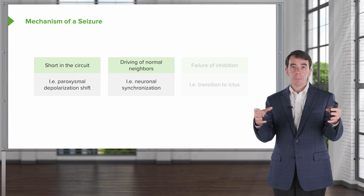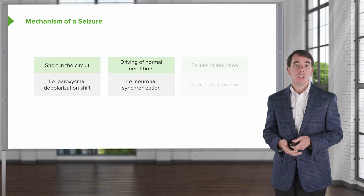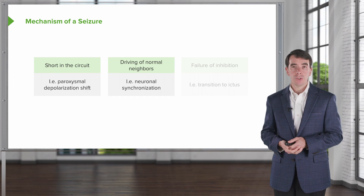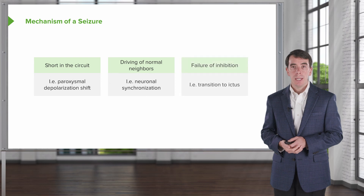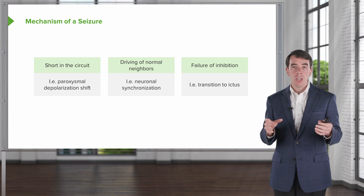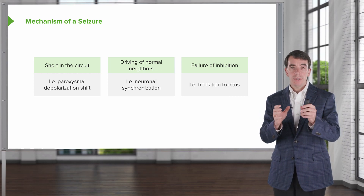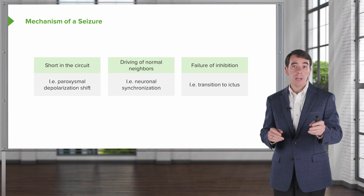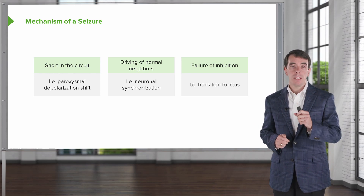A seizure will not spread unless the surrounding neurons get involved and begin to seize as well and be involved in that seizure activity. And then the third feature is failure of inhibition. We call this the transition to the ictus — what really allows the seizure to spread from that one focus to other areas of the brain is the lack of inhibition.